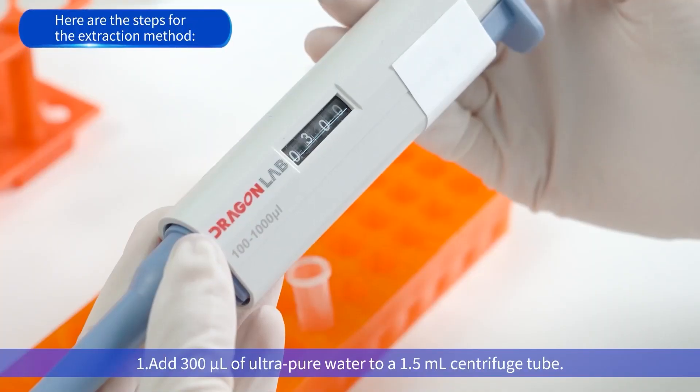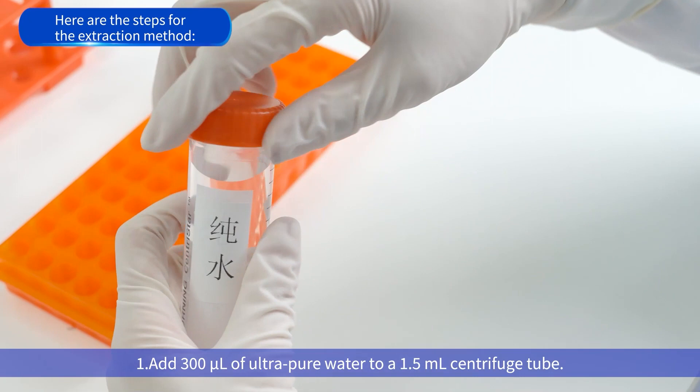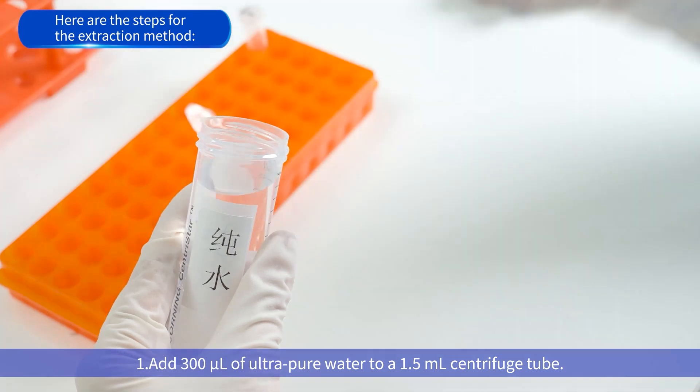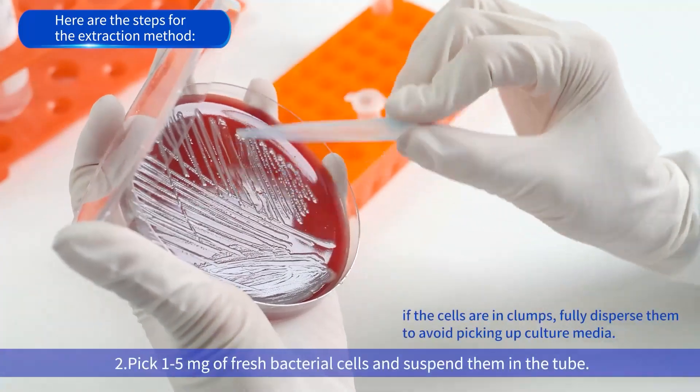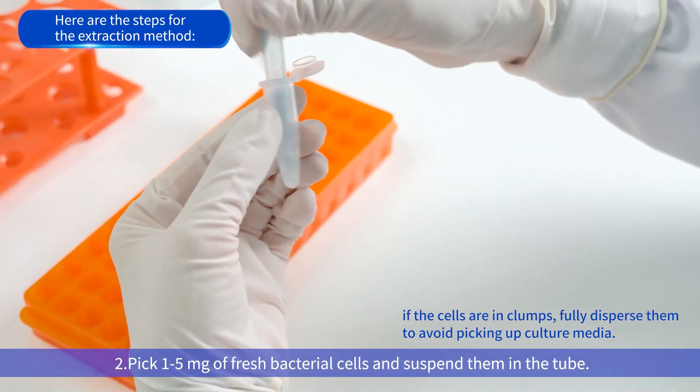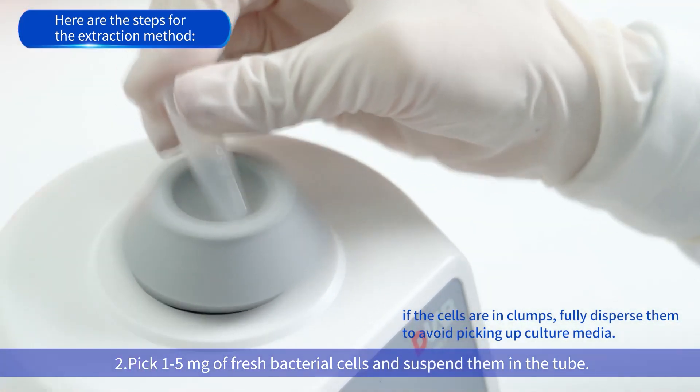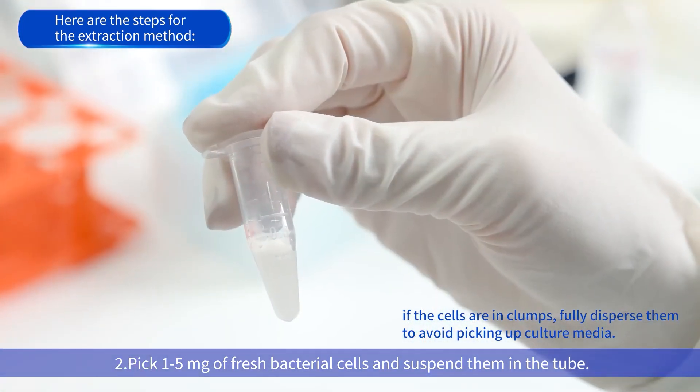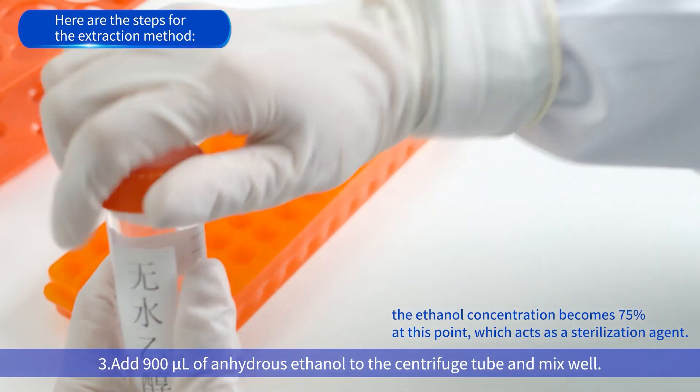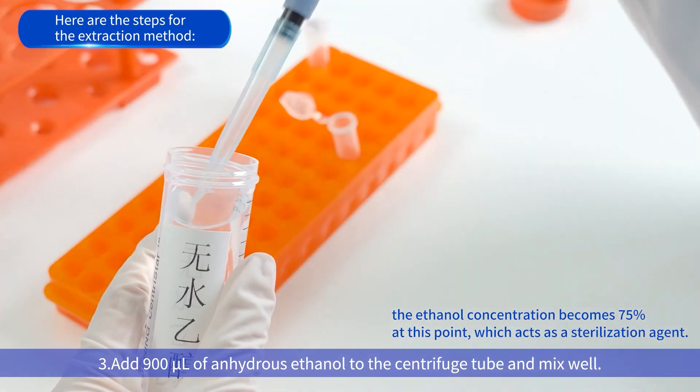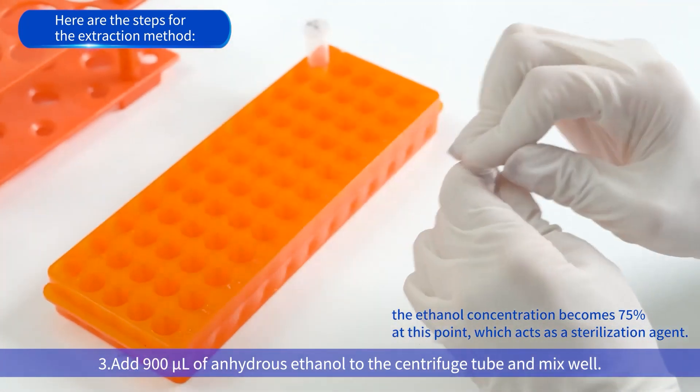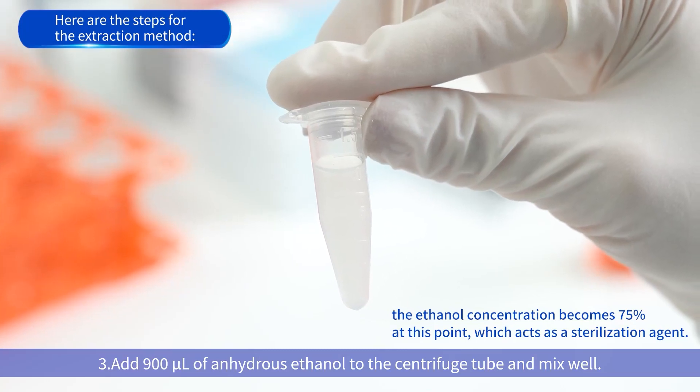Here are the steps for the extraction method. First, add 300 microliters of ultra-pure water to 1.5 milliliter centrifuge tube. Second, pick 1 to 5 milligrams of fresh bacterial cells and suspend in the tube. If the cells are in clumps, fully disperse them to avoid picking up culture media. Third, add 900 microliters of anhydrous ethanol to the centrifuge tube and mix well. The ethanol concentration becomes 75% at this point, which acts as a sterilization agent.